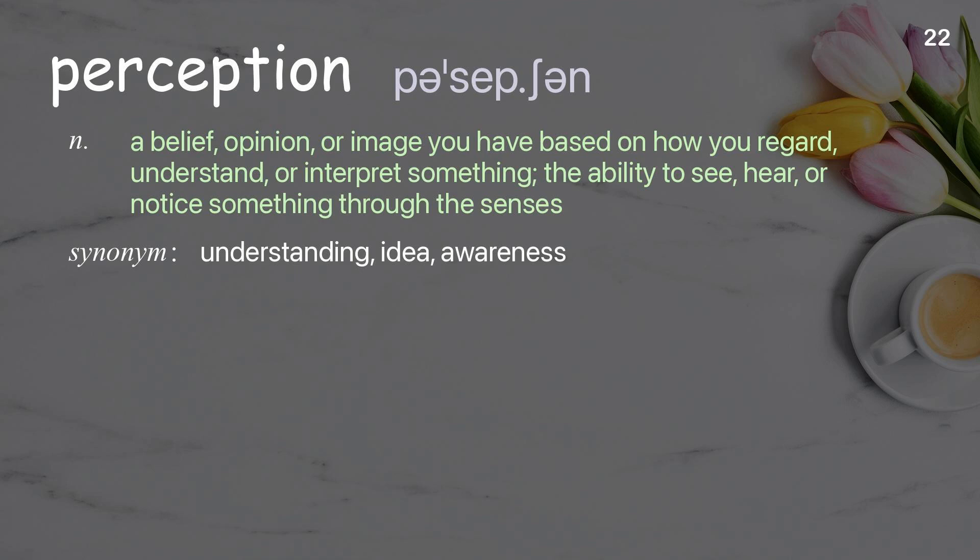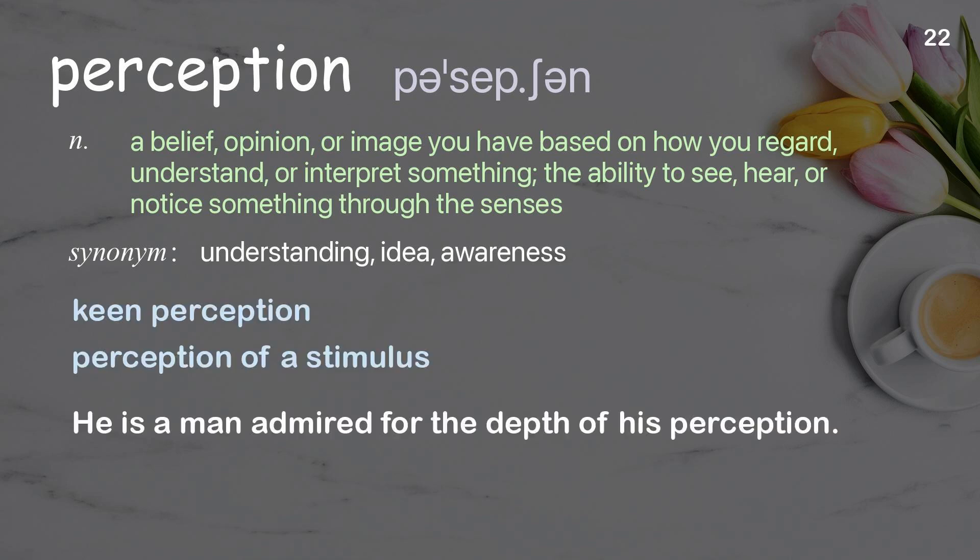Perception: a belief, opinion, or image you have based on how you regard, understand, or interpret something; the ability to see, hear, or notice something through the senses. Examples: keen perception, perception of a stimulus. He is a man admired for the depth of his perception.